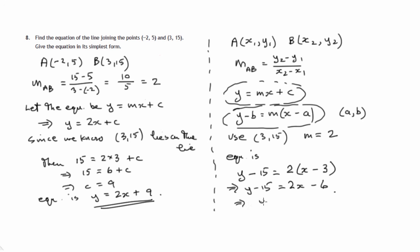We add 15 to both sides. The 15 on to the negative 15 disappears, but 15 on to the negative 6 gives us 9 — as we had before. So two different ways of doing it, and probably both are around the same difficulty.